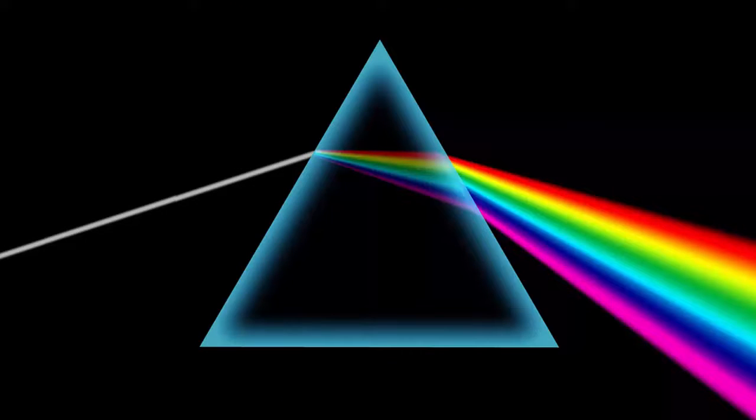If you combine all the colors of the spectrum, you see white light. Indeed, we can reverse the process. We can split white light up into its constituent parts by passing it through a triangular prism.